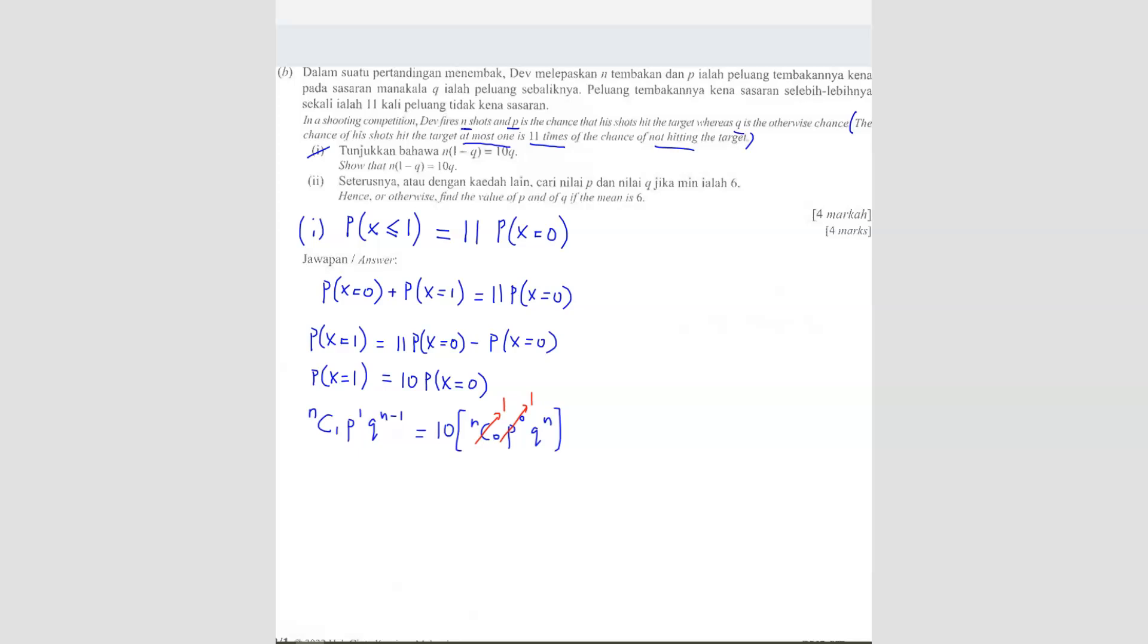So what you have here is N C 1 is equals to N. You can type in your calculator any number. Like, for example, 10 C 1 equals to 10, 11 C 1 equals to 11. So it's understood this one is equals to N.